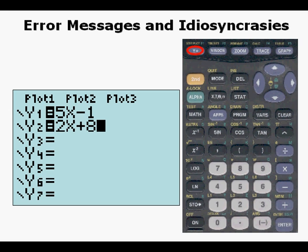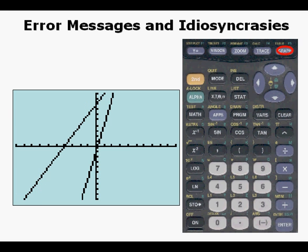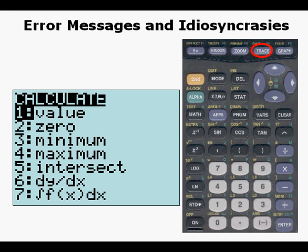Now, let's look at a system of equations 5x minus 1, 2x plus 8. We graph these systems and we do not see the intersection point we're looking for, but we can see that it's going to be above the area of the view screen.